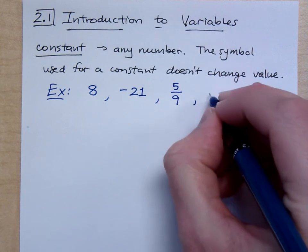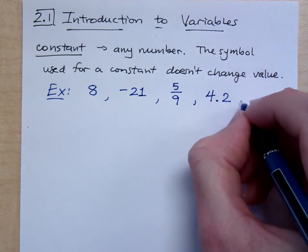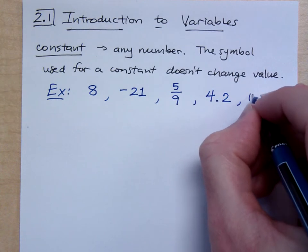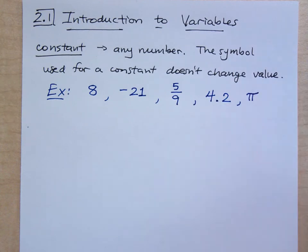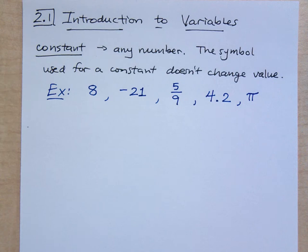I could have decimals — 4.2. Sometimes we use special symbols to represent constants in a math class, like the Greek letter pi. In case you've forgotten, pi is the ratio of the circumference of a circle to its diameter. It's a fixed number. It's not a pretty number, but it is fixed. That's what it is to be a constant. Everything we've been doing so far this semester has been a constant.